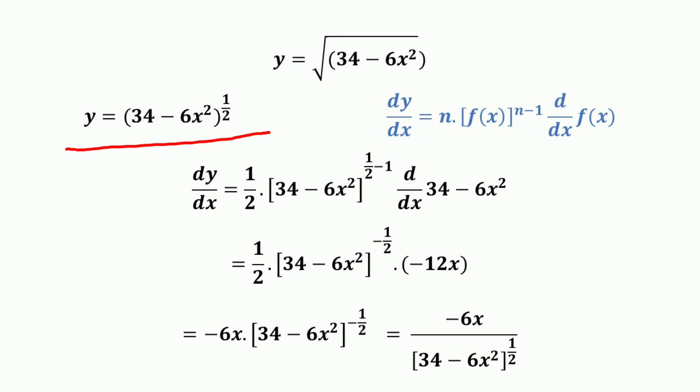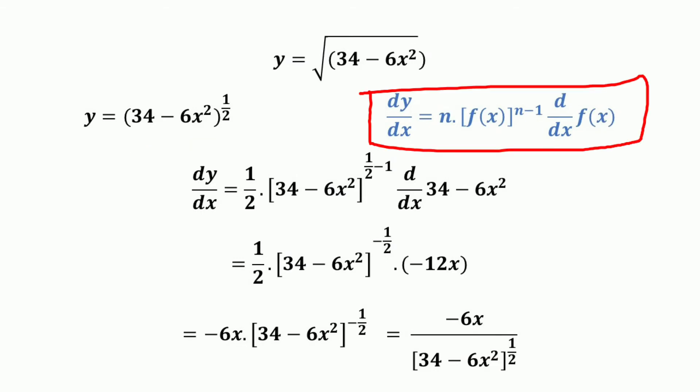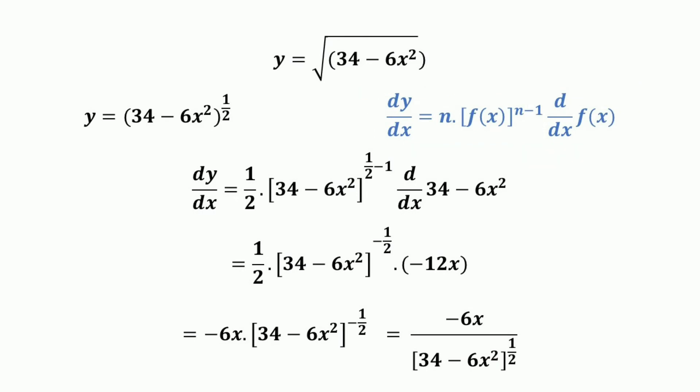In this case, the function f(x) is equal to 34 minus 6x². The derivative dy/dx is equal to n times f(x) raised to the power n minus 1, multiplied by the derivative dy/dx of f(x), where f(x) equals 34 minus 6x².